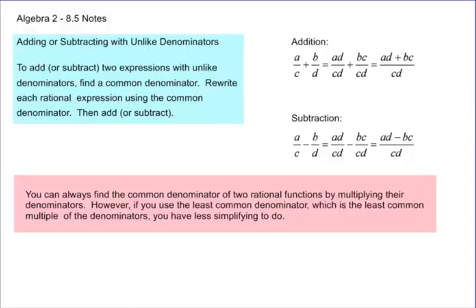Now we want to add and subtract fractions with different denominators. And this is just like what you did in grade school — you have to have the denominators be the same in order to add or subtract. And if your denominators are different, you have to get them to be the same. So in this case, we're going to take two unlike denominators, find a common denominator, and then rewrite each rational expression with the common denominator. Then we can add or subtract.